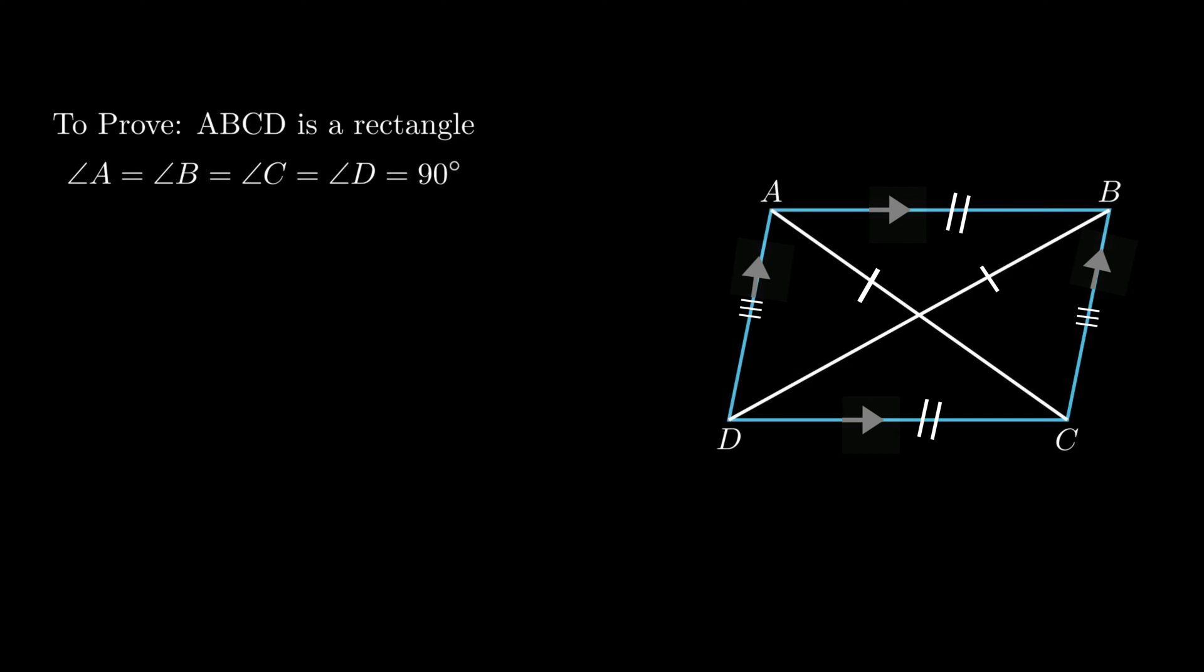Since opposite sides are already equal and parallel by the properties of parallelogram, to prove it as a rectangle only vertex angles need to be proved equal to 90 degrees. To prove this, consider triangle ABC and triangle DCB.